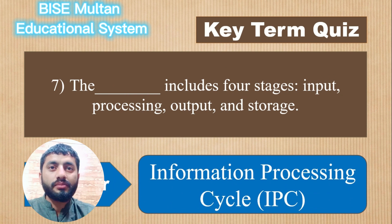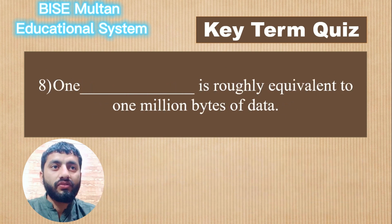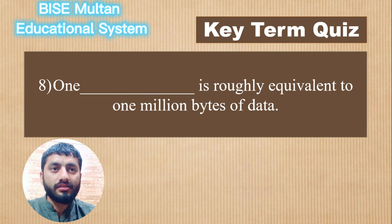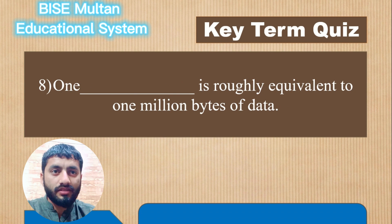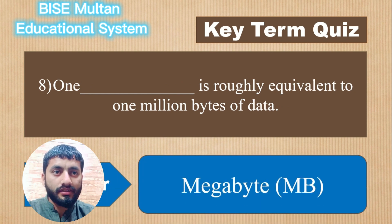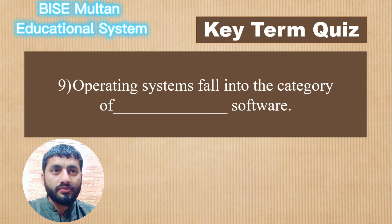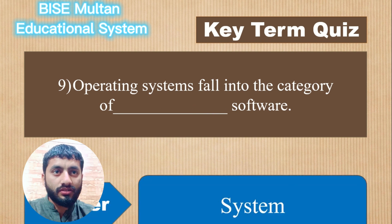Question 8. One blank is roughly equivalent to 1 million bytes of data. The answer is Megabyte or MB. Question 9. Operating Systems fall into the category of blank software. The answer is System Software.